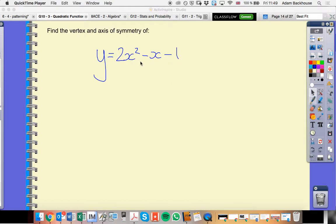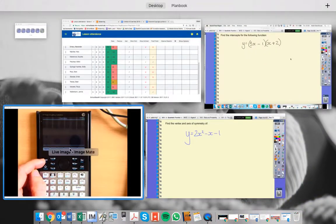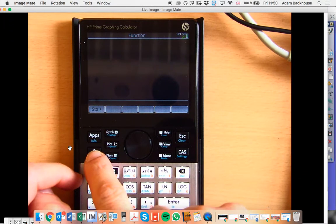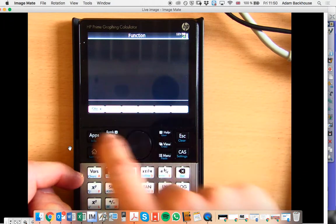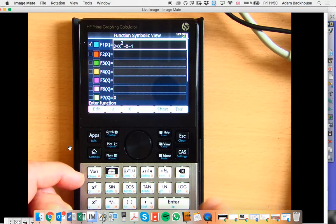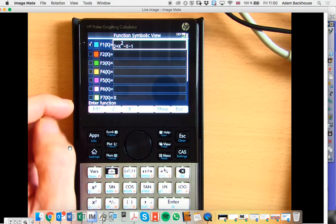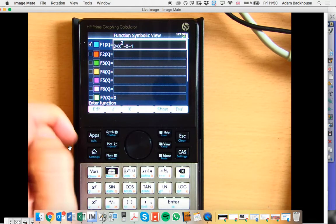My first job is to enter the function into function 1 on my calculator. So I'll find my function app, and I've entered 2x squared minus x minus 1 as function 1.